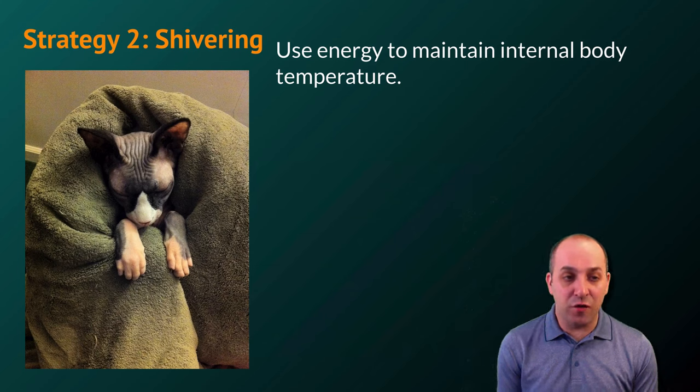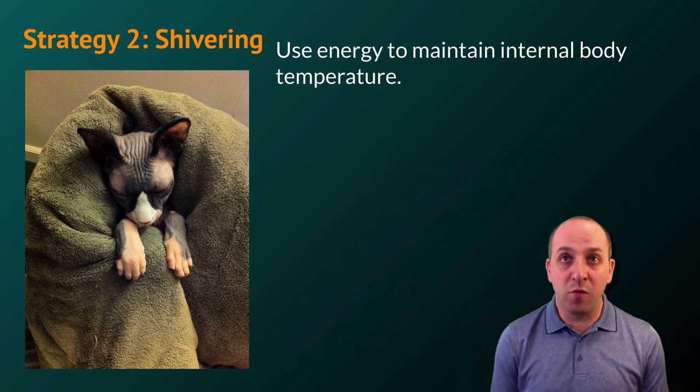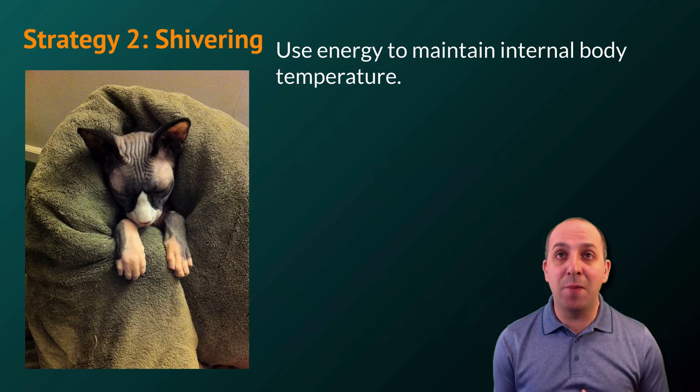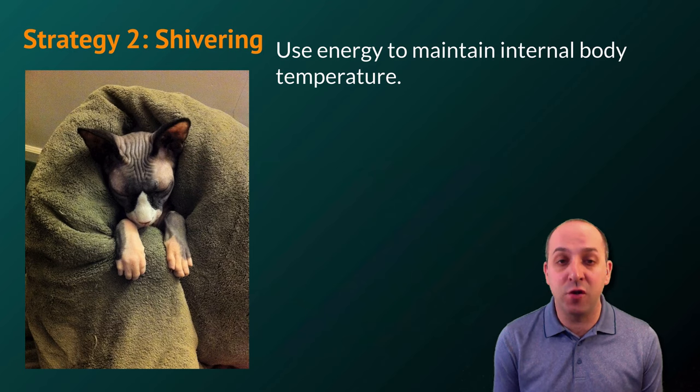Another classic example of strategies used by animals in order to maintain their internal body temperature is shivering. Shivering is an involuntary muscular response. Muscles engage in this process through aerobic cellular respiration, which produces a lot of metabolic heat energy that can then be used by the body to help maintain a tolerable internal body temperature.